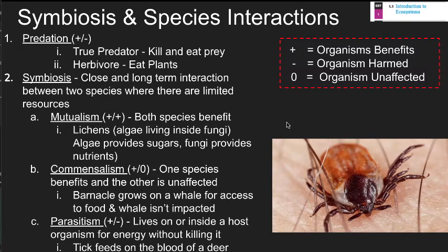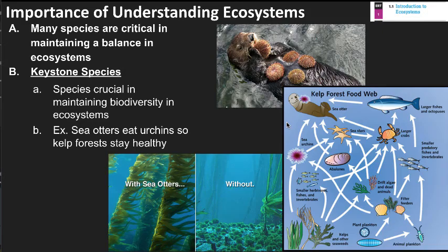Parasitism is a plus-minus relationship like predation, but it doesn't quite fit predation perfectly. A parasite lives on or inside a host and takes energy from it — for example, a tick is an ectoparasite that lives on the outside of an organism and sucks its blood, even if temporarily. Some parasites are more permanent than others, but they shouldn't harm the host organism to the point of killing it.